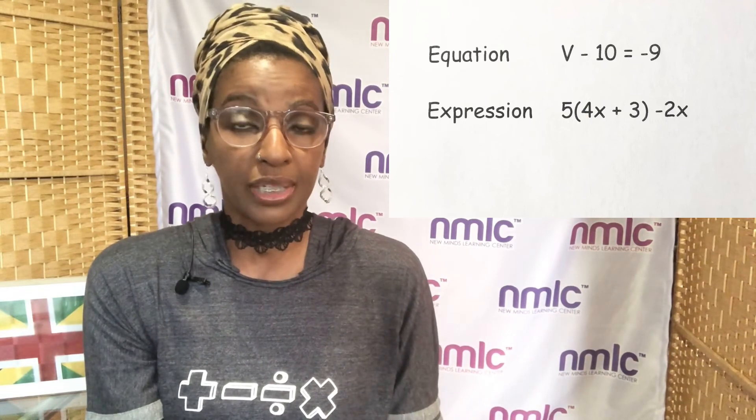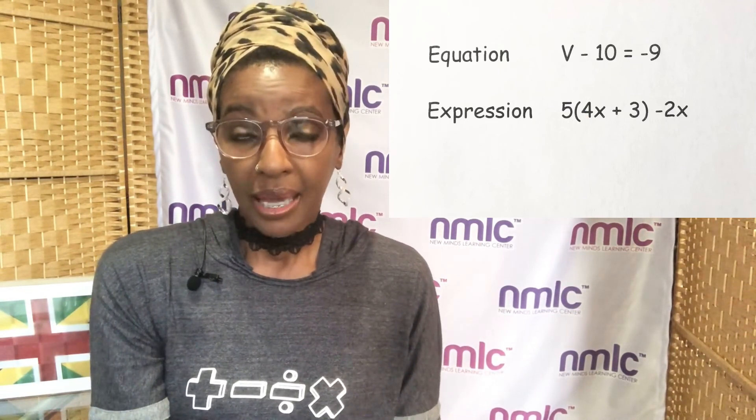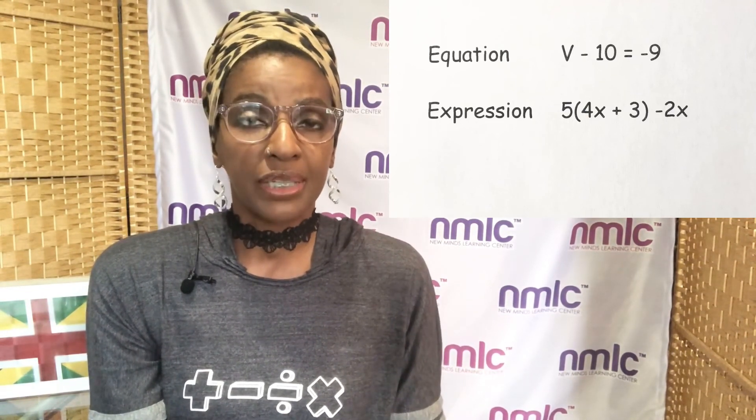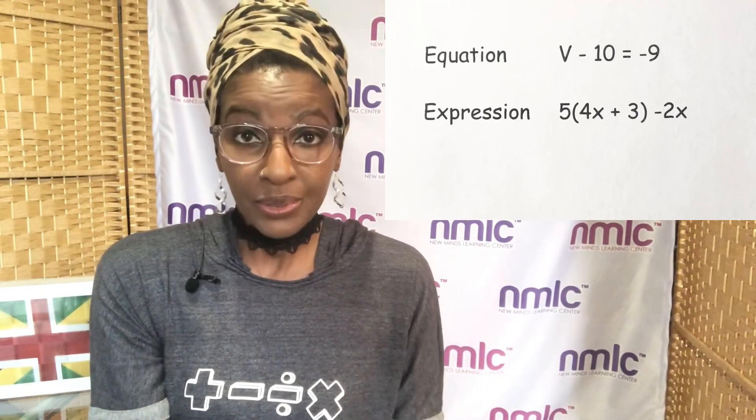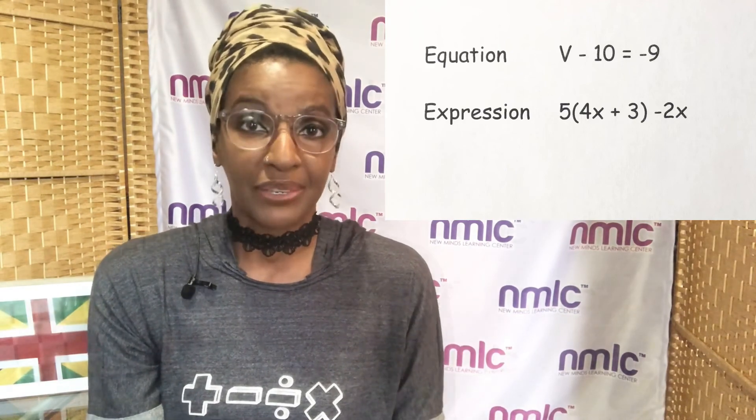So in this case you see a V minus 10 and then it's separated with another symbol like an equal sign like this one here, V minus 10 equals, and then you have the minus 9 on the other side.